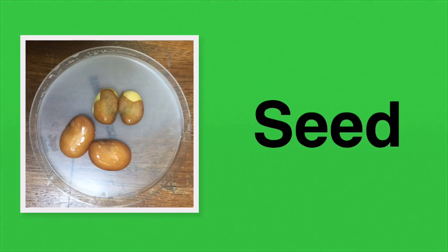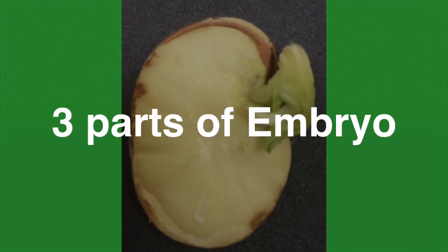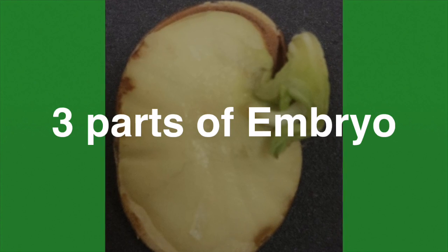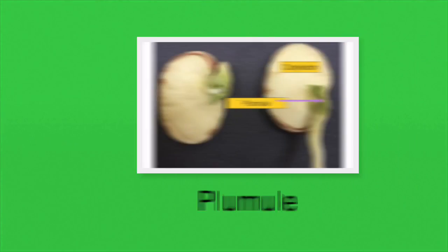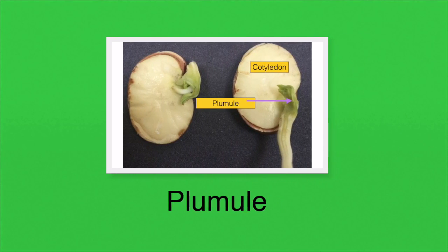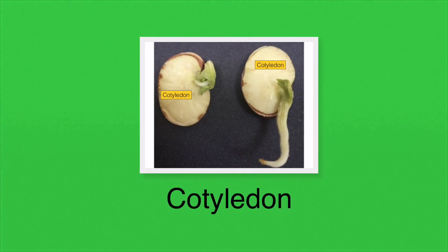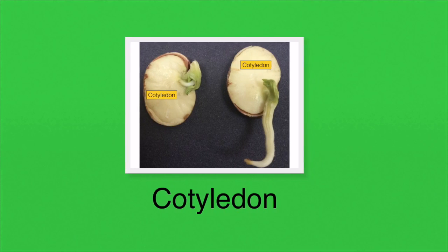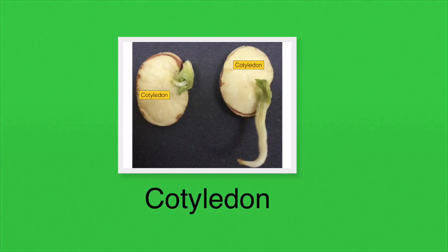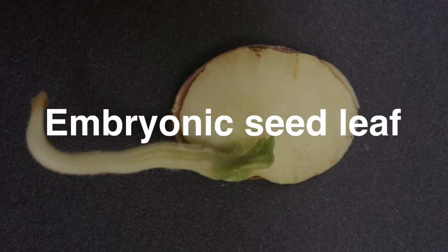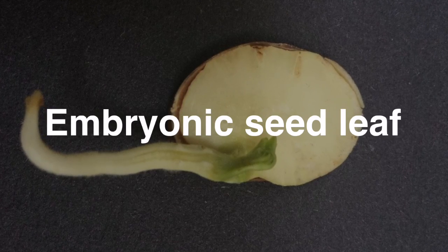The seed contains the embryo plant and there are three parts you need to know for your exam. The plumule will eventually become the shoots of the new plant, and the radicle will eventually become the root of the new plant. The third part is the cotyledon — you can see the two cotyledons in this broad bean seed. A cotyledon is an embryonic seed leaf.